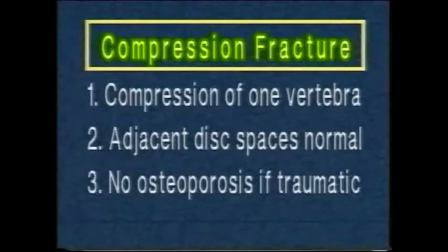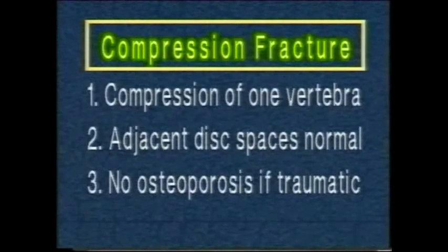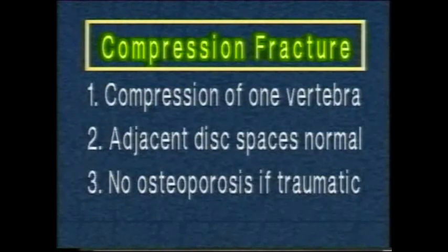The radiological features of a compression fracture of the spine are: compression of one vertebral body, with or without osteoporosis, and normal disc space above and below.